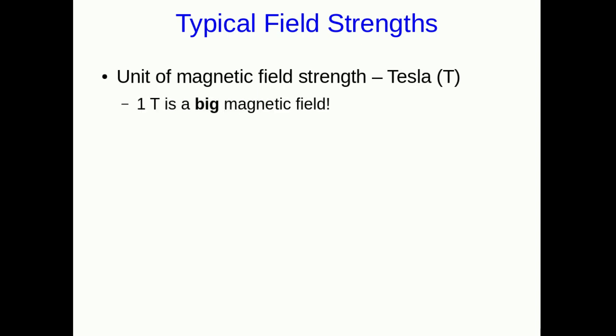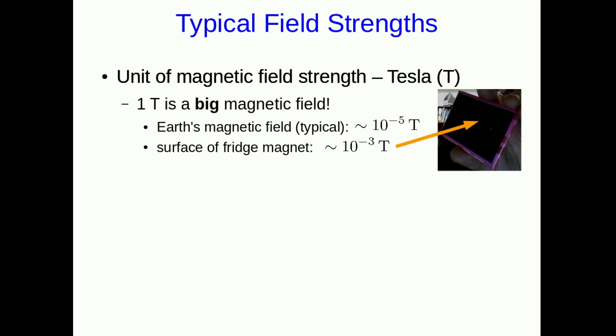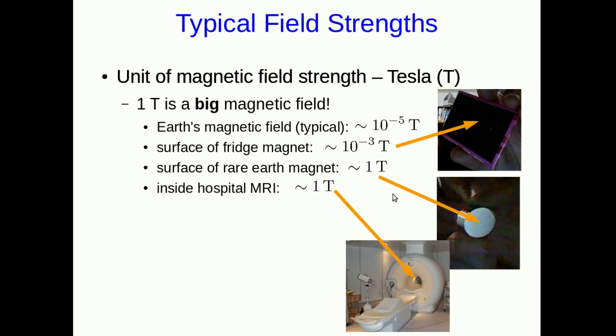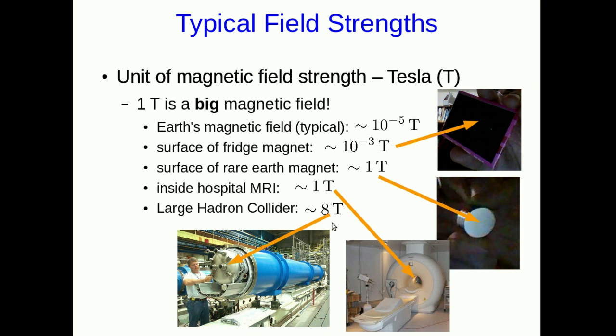You don't very often come across a full one Tesla field. Earth's magnetic field is about, typically in most places, about 5 times 10 to the negative 5 Teslas. A fridge magnet right at its surface has a field of about a milli Tesla. A rare Earth magnet will produce a full Tesla. So that tells you that's a strong field. If you've played around with rare Earth magnets, you know they're strong. And similarly, inside a hospital MRI machine, the field is about a Tesla. If you want stronger fields than that, you've got to look in places like the Large Hadron Collider, where they generate 8 Tesla fields.